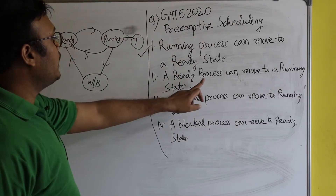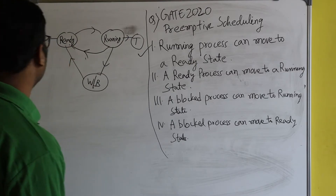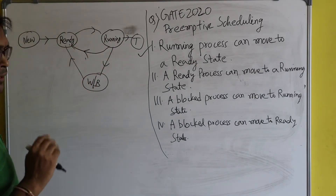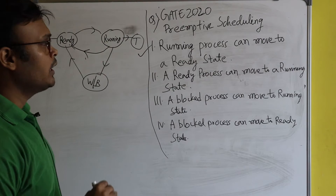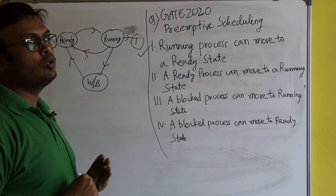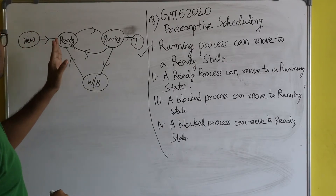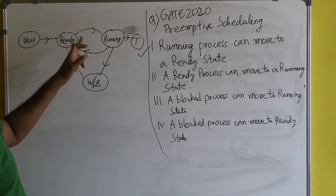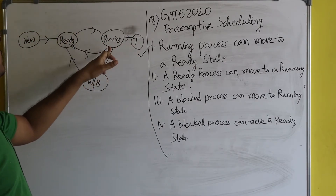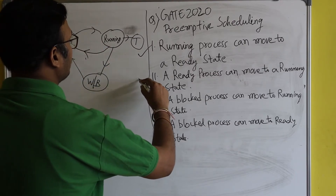Option two: a ready process can move to a running state — obviously yes. As every process must go through at least four steps: new, ready, running, then terminate. So the transition from ready to running exists, and option two is also correct.